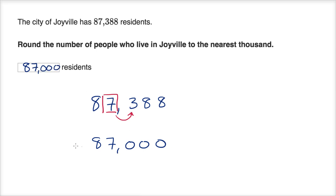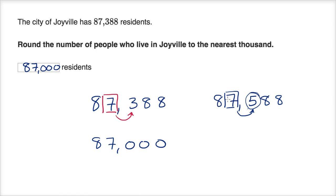Since all the examples ended up rounding down, let me show you what happens when we round up. If it was 87,588, we are still rounding to the nearest 1,000. You go one place to the right and see that this is five or larger, so you round up — to 88,000 in this situation. So: one place value to the right — if that digit is less than five, round down; if it is five or greater, round up.